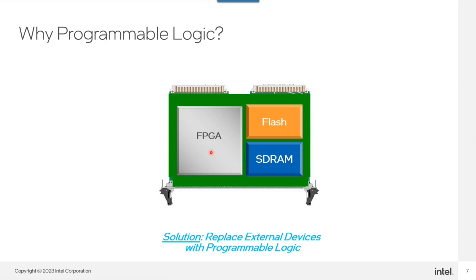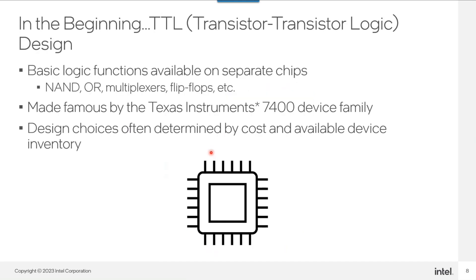In the beginning, digital logic was usually represented with TTL logic — Transistor-Transistor Logic chips. You would find the chips and gates you needed and manually wire them together. This was made famous with the TI 7400 device family, where we'd go through a bin of chips, put them on a board, and wire them together to get the logic function needed. Design choices were determined by cost and the available devices on hand.